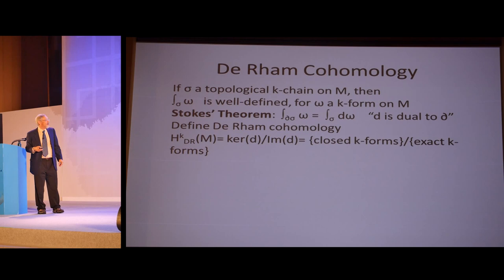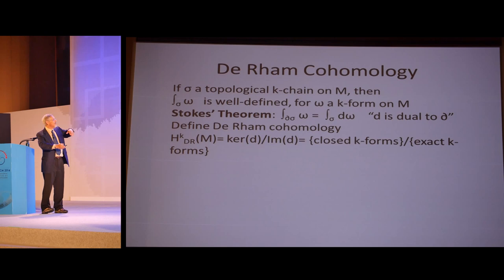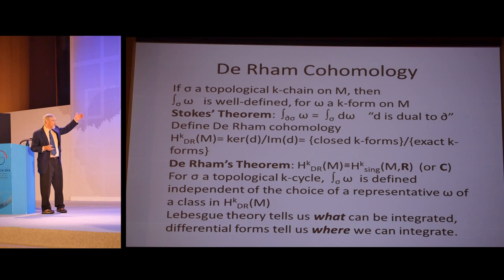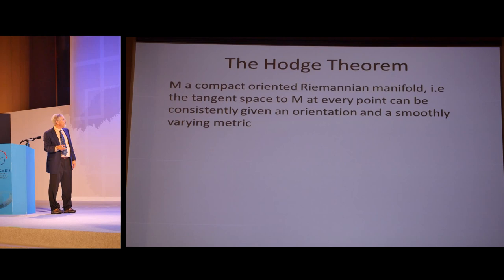Now we can define de Rham cohomology, which is just the closed k-forms mod the exact k-forms. You sometimes see examples in calculus of vector fields where the curl is zero but it's not a gradient if you have some singularity in the midst. But this gets turned around because now we define something exactly based on those failures. de Rham's theorem is that this captures the traditional cohomology. If you use real valued forms, it gives you real cohomology, or complex if you use complex valued forms. Because of Stokes' theorem, you have a topological k-cycle. If you integrate omega, it's independent of what choice of the de Rham class you use.